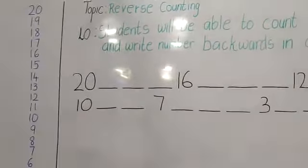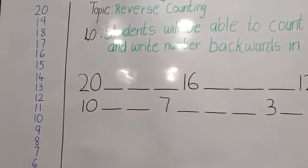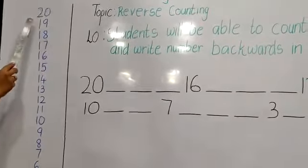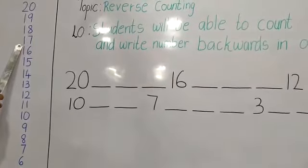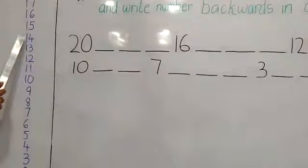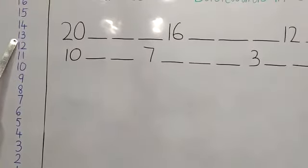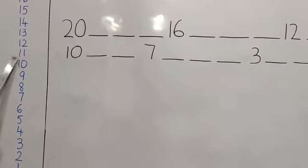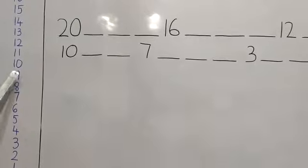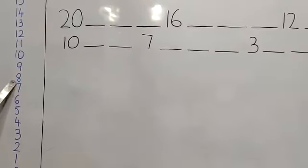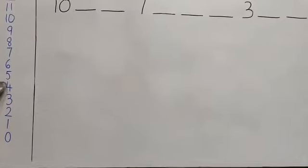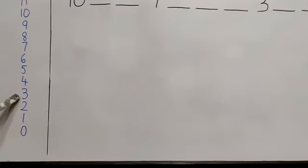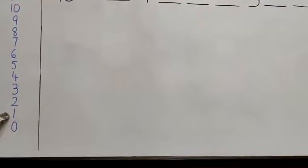So for this, first we do the oral counting. Let's start: 20, 90, 80, 70, 16, 15, 14, 13, 12, 11, 10, 9, 8, 7, 6, 5, 4, 3, 2, 1, 0.